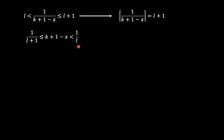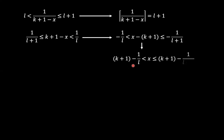Taking the reciprocal swaps the inequality sign. Applying a negative sign swaps them again, since the absolute higher value becomes less than the absolute lower value. Adding k plus 1 to both sides gives us k plus 1 minus 1 over l, less than x, and x less than k plus 1 minus 1 over l plus 1. This defines the interval for which the expression falls in the corresponding integer range.